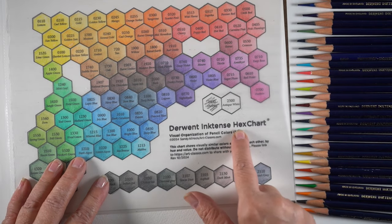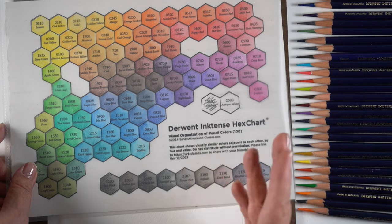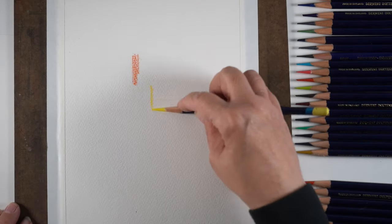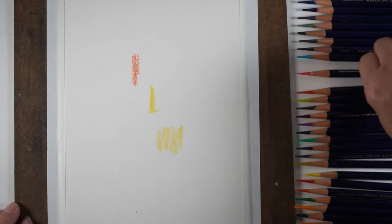I've updated the hex chart and it now has 100 colors rather than 72. If you already bought the 72, you've been notified to just go to your account and re-download.